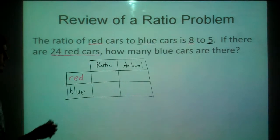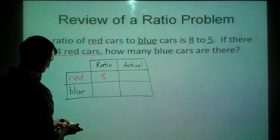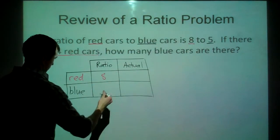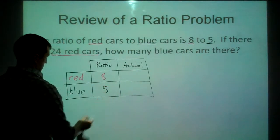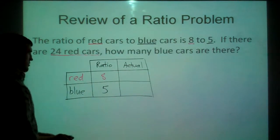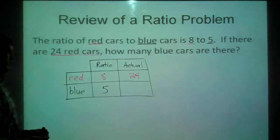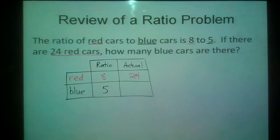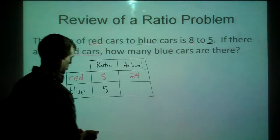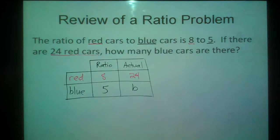Now we just kind of fill in what we know. Our ratio is 8 to 5. That's red to blue. 8 to 5. And the only other piece of information they give us is that we know there are 24 red cars. So 24 red cars. We do not know how many blue cars there are, but that's what we're trying to figure out. So let's call that B for blue.